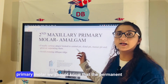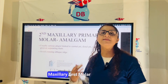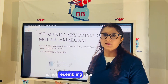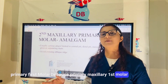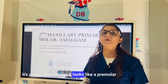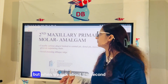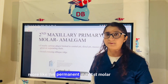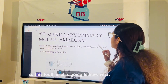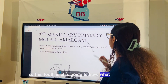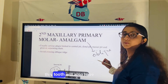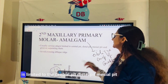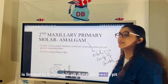For the second primary molar, note that the permanent maxillary first molar does not resemble the primary maxillary first molar — the primary maxillary first molar is a very small molar that looks more like a premolar. The second primary molar, however, looks more like the permanent maxillary first molar and will have an oblique ridge and the cusp of Carabelli.